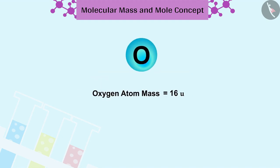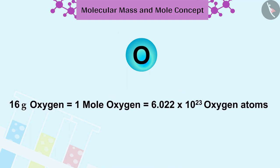The oxygen atom has a mass of 16u. Therefore, the gram atomic mass of oxygen will be 16 grams. 16u oxygen has only one oxygen atom, and in 16 grams of oxygen, it's one mole atom, that is 6.022 into 10 raised to 23 oxygen atoms.